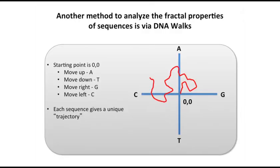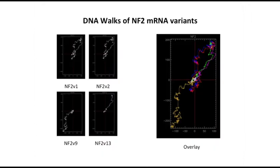But what happens when you have a mutation? Instead of a square chaos game, you can do what's called a random walk — really sequencing in the context of a DNA walk. The starting point is zero, zero, and you have A, T, G, C moving in different directions. Each sequence gives a unique trajectory. Here, for example, are NF2 mRNA variants that occur in mesothelioma, and you can appreciate in color that the variants of NF2 are quite different in terms of their fractal analysis.